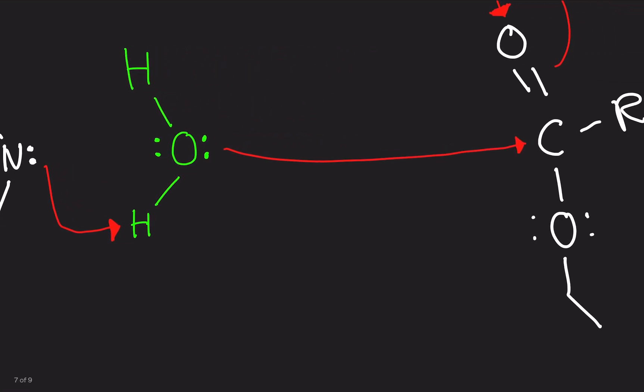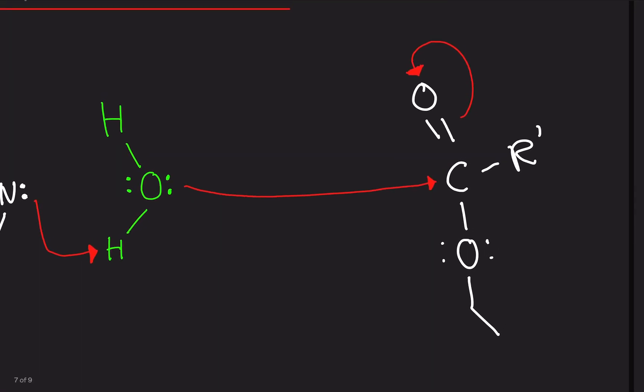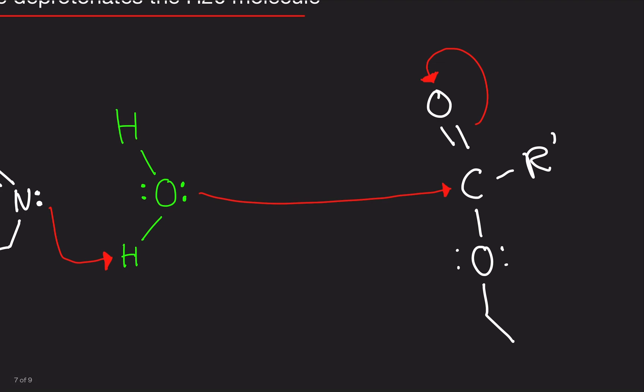Now the lone pair of electrons on the oxygen here is going to attack the acyl group. When it attacks the acyl group, it's going to bond to the carbon. But notice if that happens, we're going to have carbon will have five bonds: one from the oxygen, two from the double bond, one from the R group, and one from that.